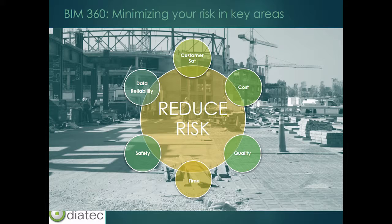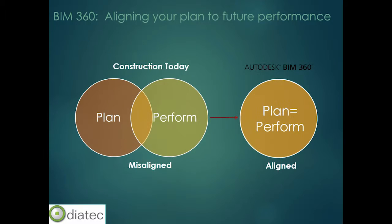Consistent and reliable data means everybody is on the same page, reducing the risk of people using out-of-date or overwritten information on site. By having data freely available to everybody as it changes and evolves, you ensure it all falls within the same project parameters. And lastly, customer satisfaction: happy customers are returning customers. Reducing risk across all these areas gives customers confidence that you will deliver projects consistently with high quality and on time.